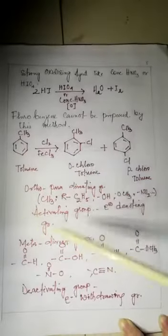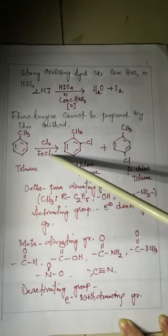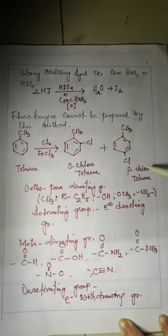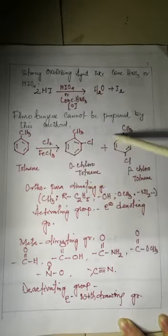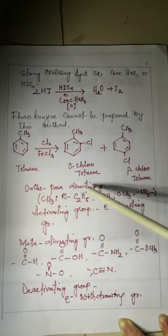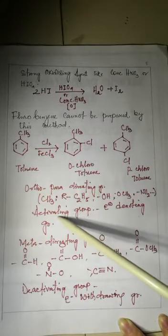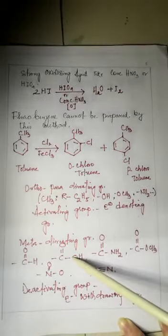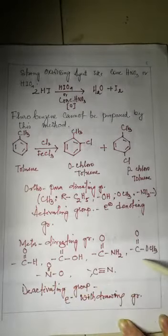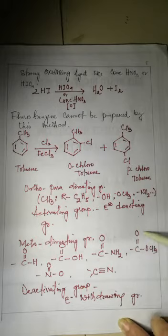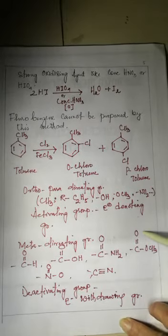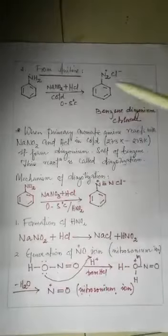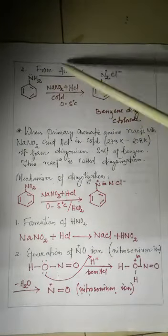This reaction follows the ortho-para directing group rule. The methyl group in toluene is an activating group, which means it is an electron-donating group. There are also meta-directing groups, which are deactivating groups, meaning they are electron-withdrawing groups.